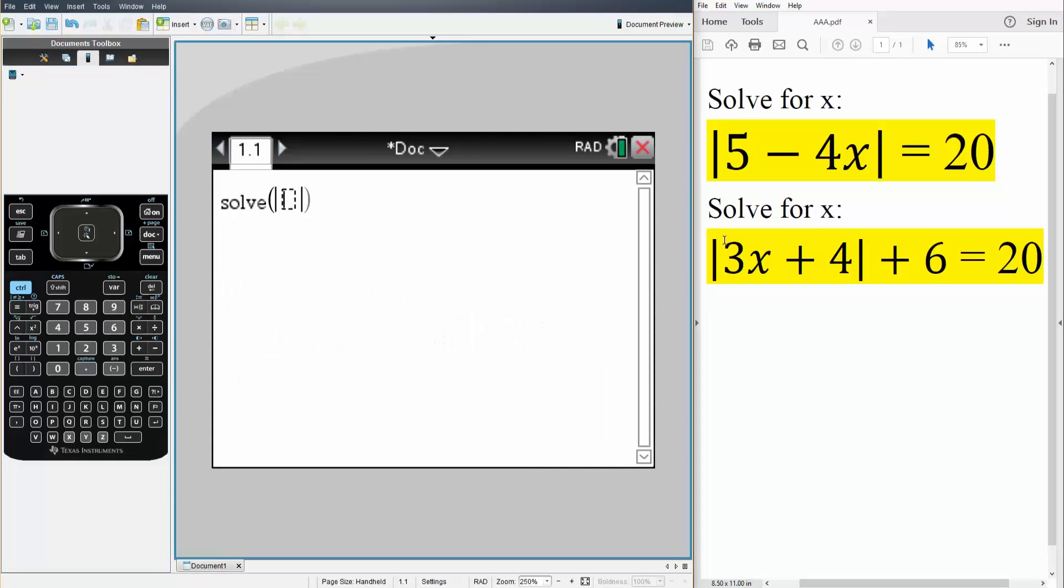We double click on it and now we write what we have. So we have 5 minus 4 times x and on the outside is equal to 20.